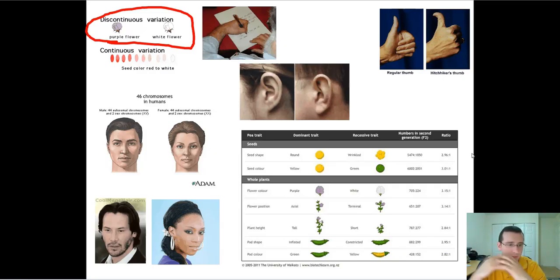Being right-handed or being left-handed, being the color and the shape and all the other types of traits that Mendel looked like were all discontinuous variation or, in other words, dichotomous, either one or the other. But that's very rare in life.